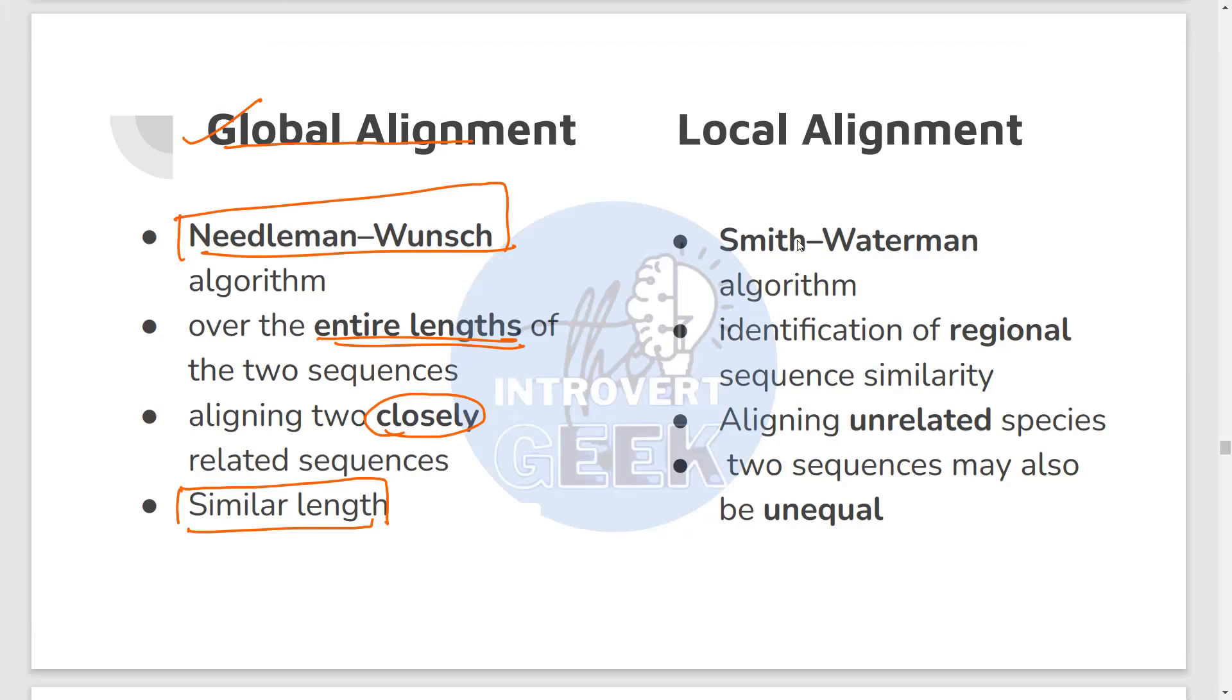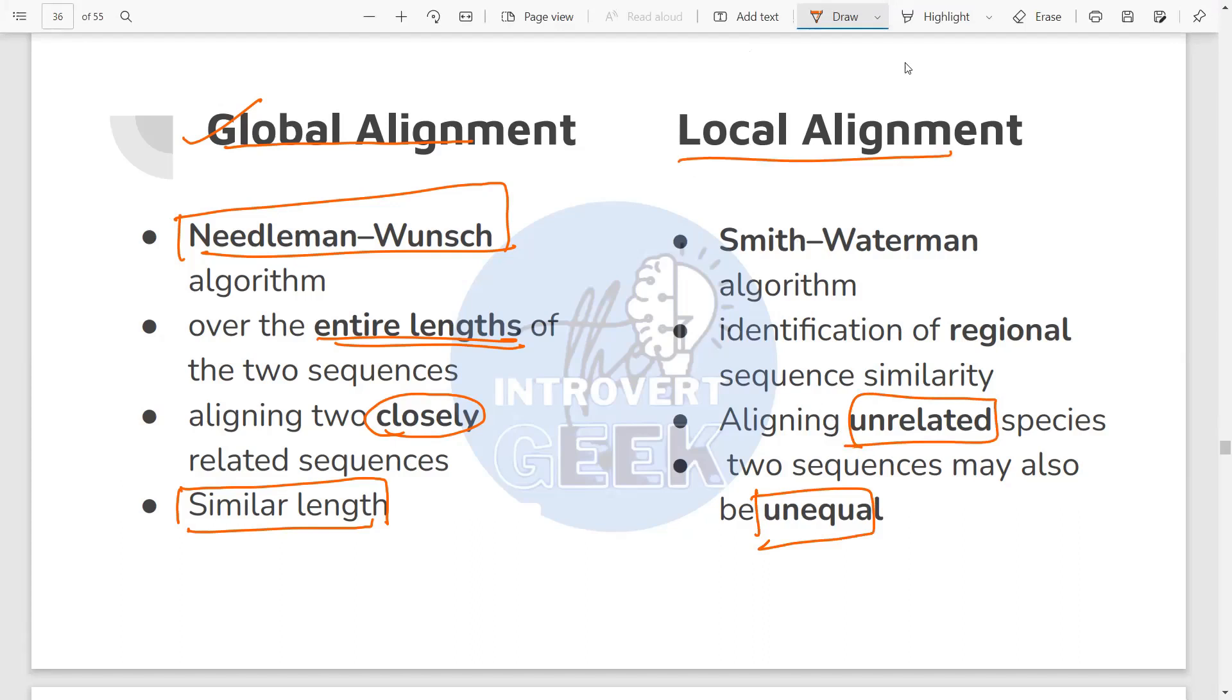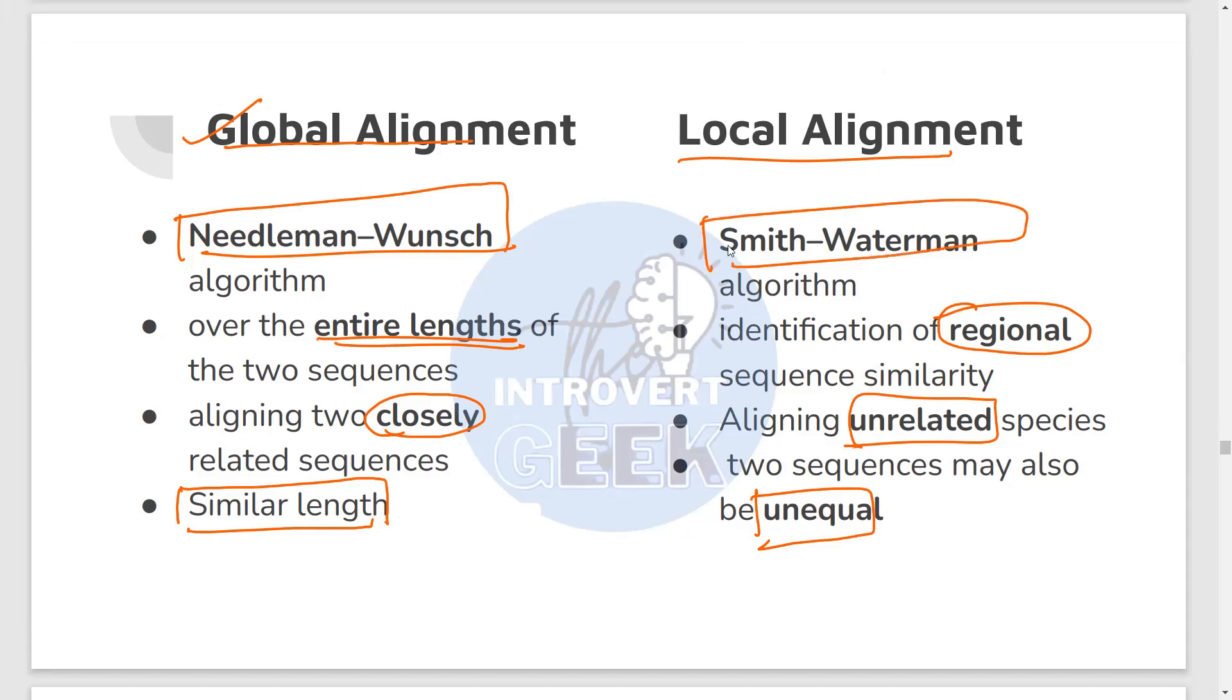Now the algorithm used for the global alignment is the Needleman-Wunsch algorithm. So if the sequences are closely related and of similar length, we will go for global alignment, which is end-to-end alignment. Whereas if you want to compare the protein amylase from humans with the amylase protein of say an animal, then in that case, you know that an animal or a bacteria will not have the same sequence length as yours. Both are not very closely related. So if you have unequal sequence length and the species are unrelated, you will go for local alignment, when you actually want to just find a regional similarity. So regional similarity is found by local alignment and you can use the Smith-Waterman algorithm to calculate it.